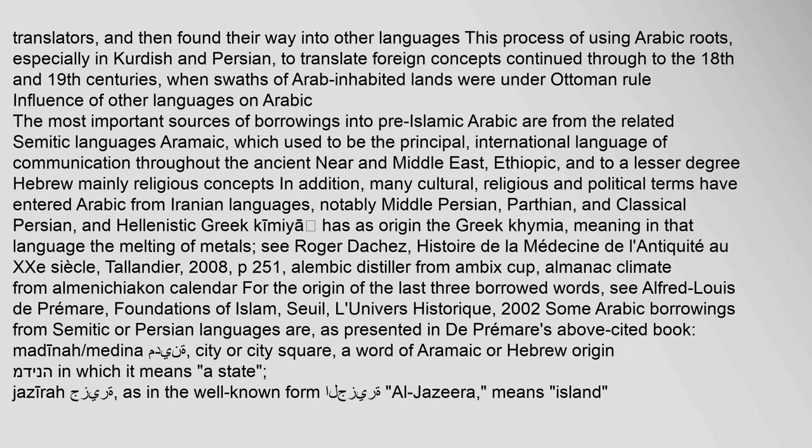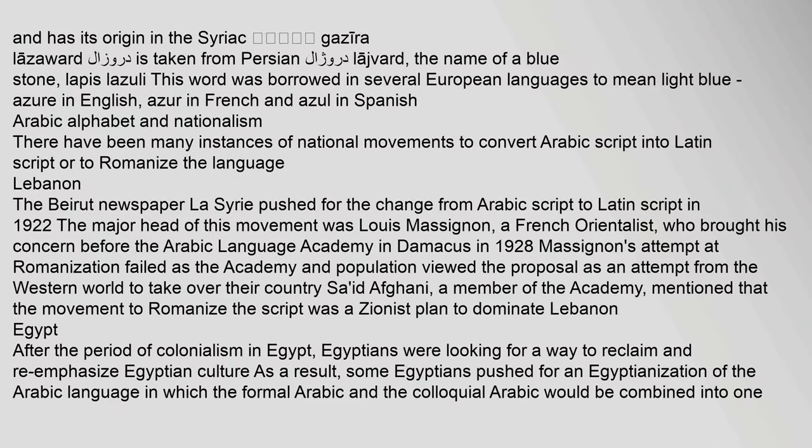The most important sources of borrowings into pre-Islamic Arabic are from the related Semitic languages: Aramaic, which used to be the principal international language of communication throughout the ancient Near and Middle East; Ethiopic; and to a lesser degree Hebrew, mainly religious concepts. Many cultural, religious and political terms have entered Arabic from Iranian languages, notably Middle Persian, Parthian, and Classical Persian, and Hellenistic Greek. The word 'azure' is taken from Persian, the name of a blue stone, lapis lazuli, and was borrowed in several European languages to mean light blue.